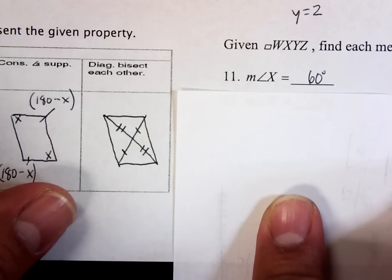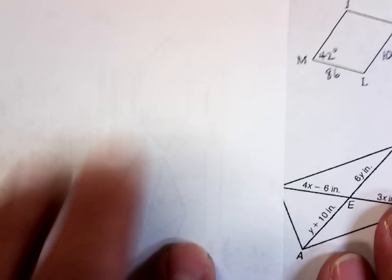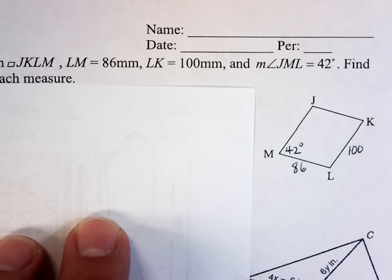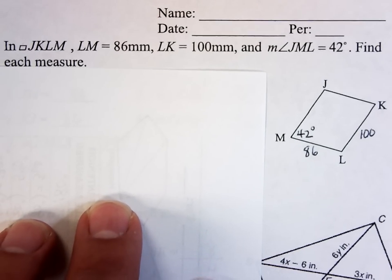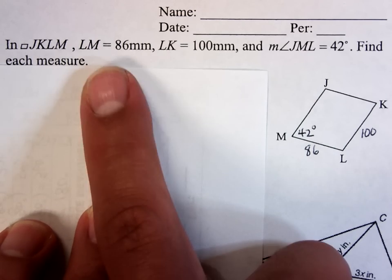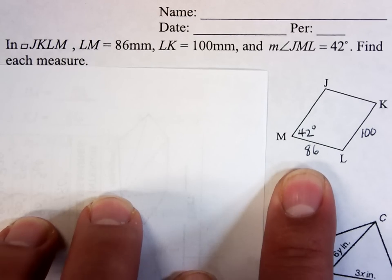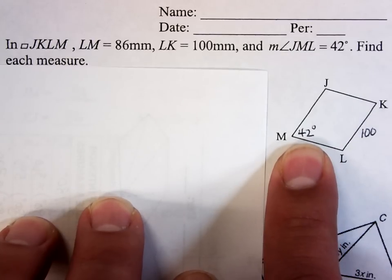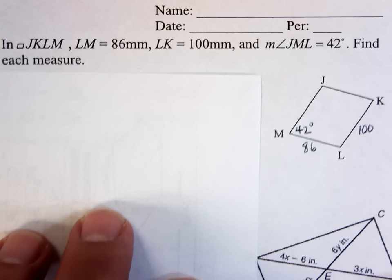So now let's do some math. The math, just like we've been doing, the math itself is not hard. The calculations are pretty simple if you remember the rules. If you remember what the rules are, the calculations are not difficult. So I went ahead and I marked up my picture. It told me that LM was 86, it told me that LK was 100, and it told me that JML was 42 degrees. So I just marked up what they told me. Now I'm going to answer the questions.